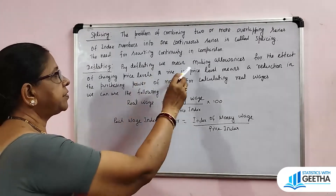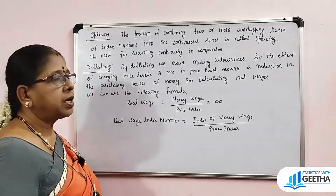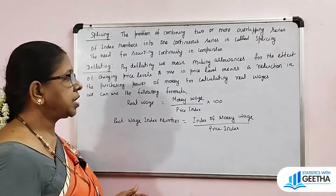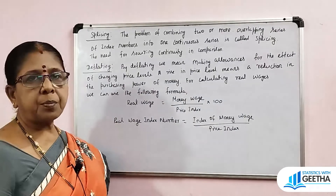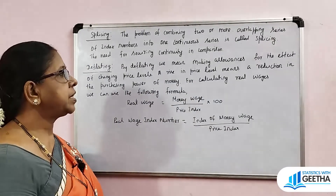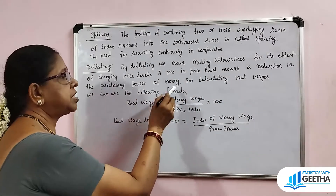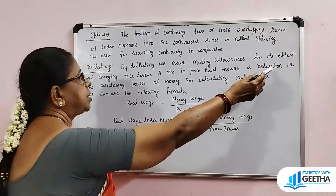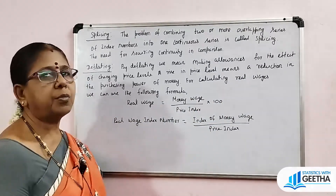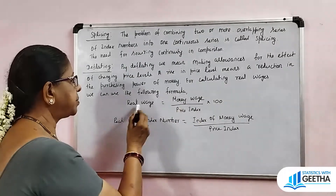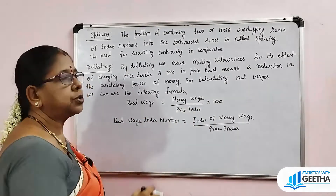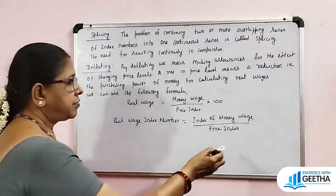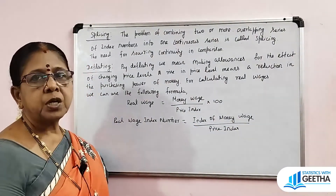Deflating means making allowances for the effect of changing price levels. A rise in price level means a reduction in the purchasing power of money. For calculating real wages, the formula is: real wage equals money wage divided by price index, multiplied by 100. The real wage index number is the index of money wage divided by price index. This is deflation.